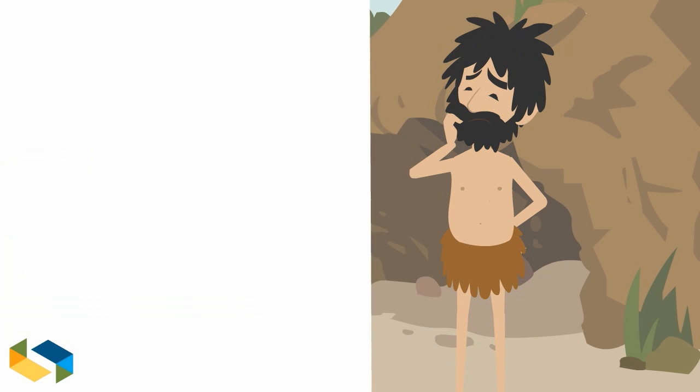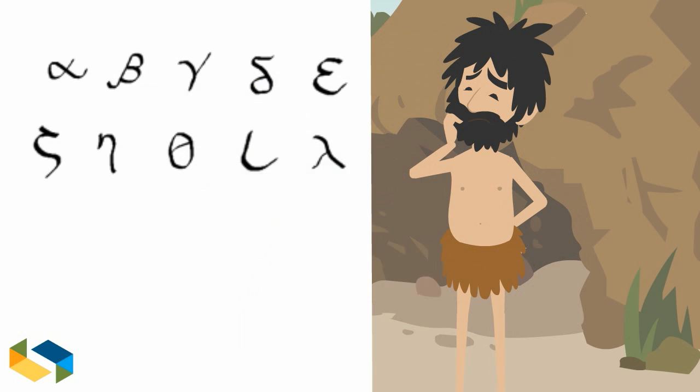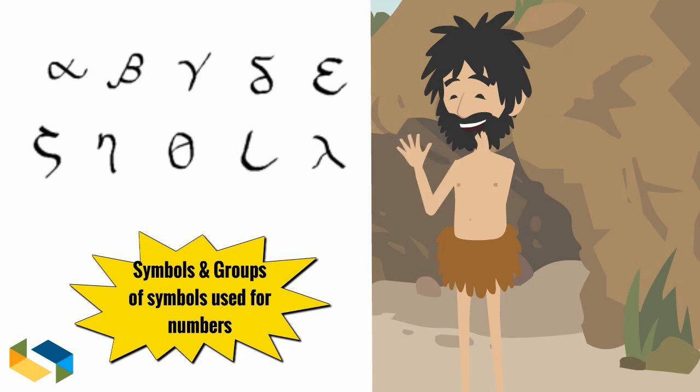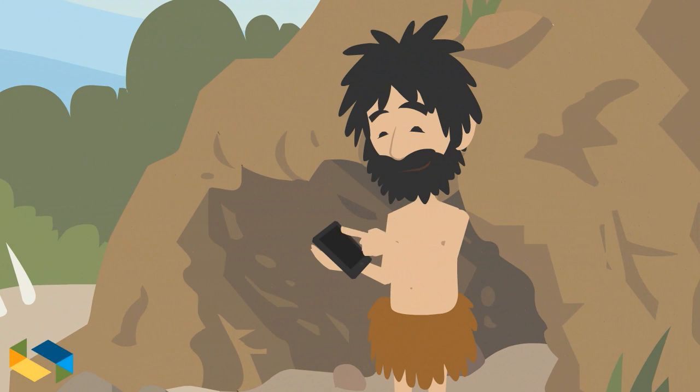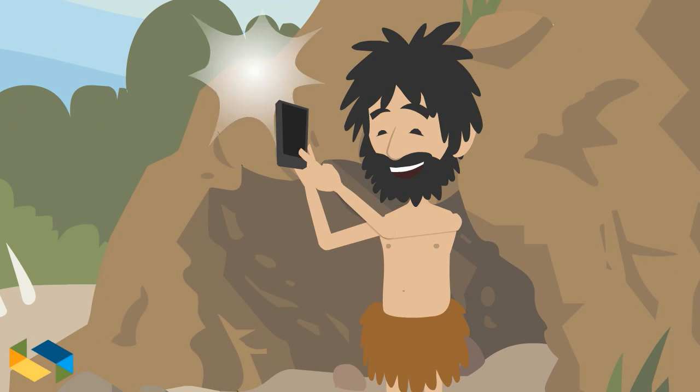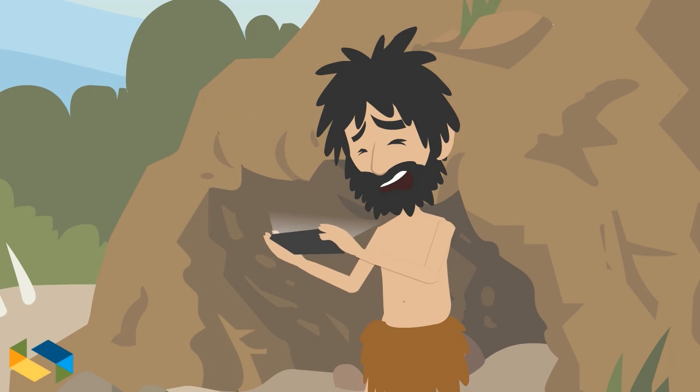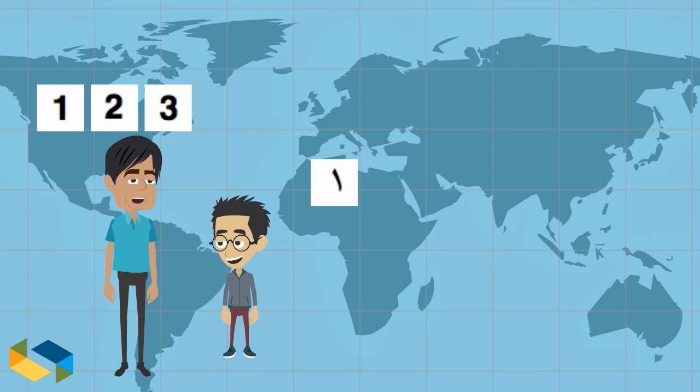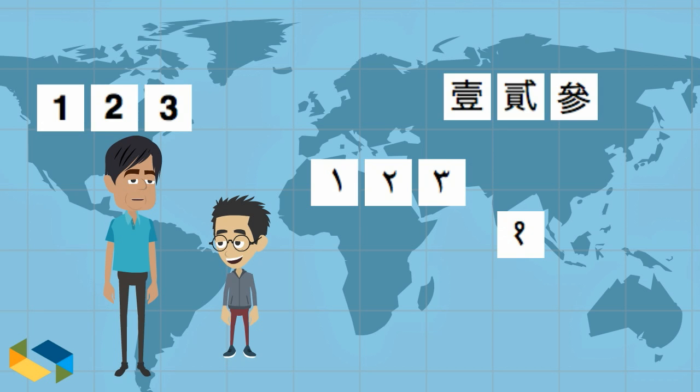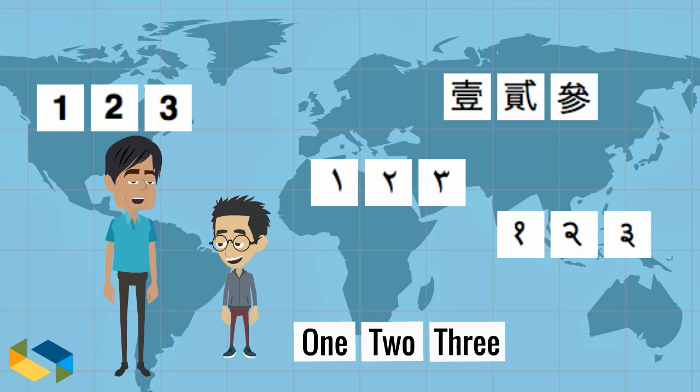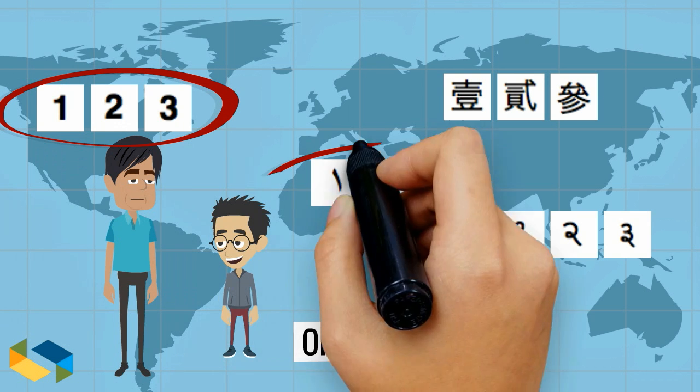As man evolved, well that's not exactly how he evolved but you get the general idea right? As he evolved many languages developed too and numbers were denoted in newer and different ways across the world. These symbols, figures or names for numbers are called numerals.